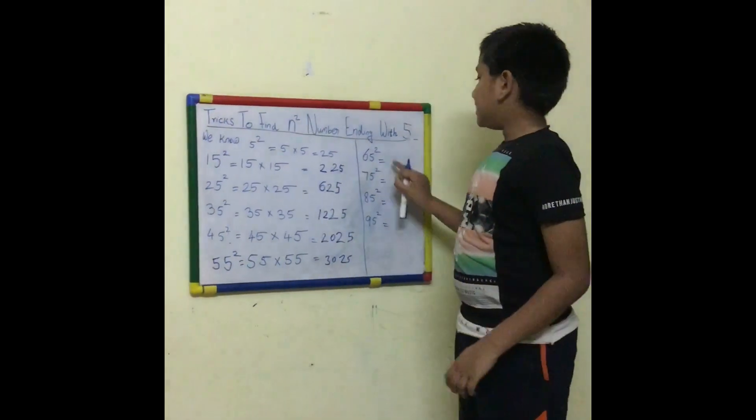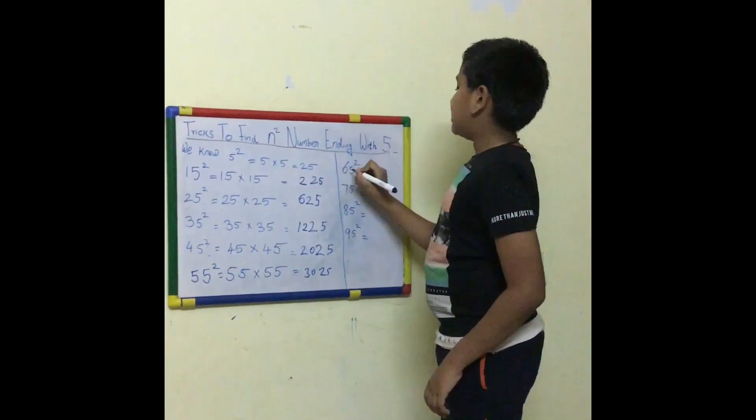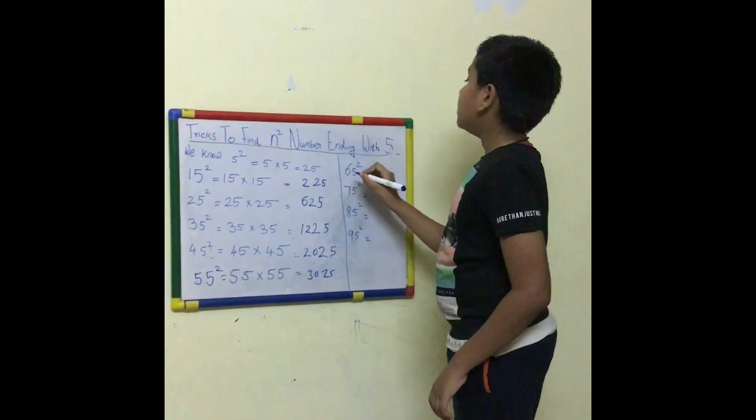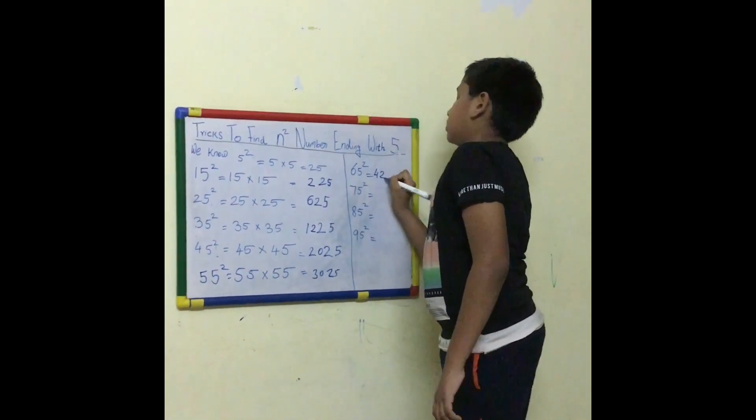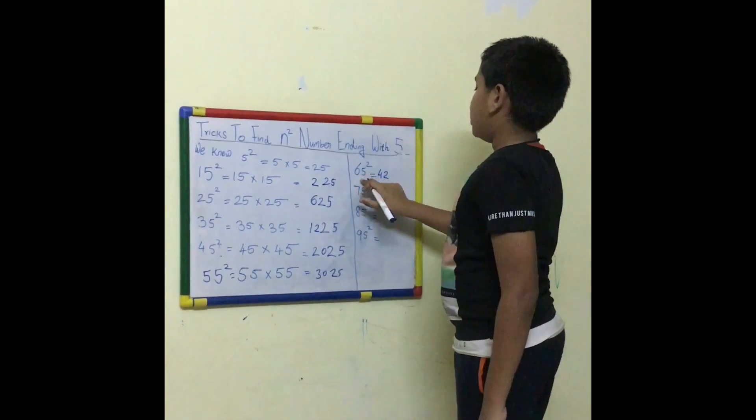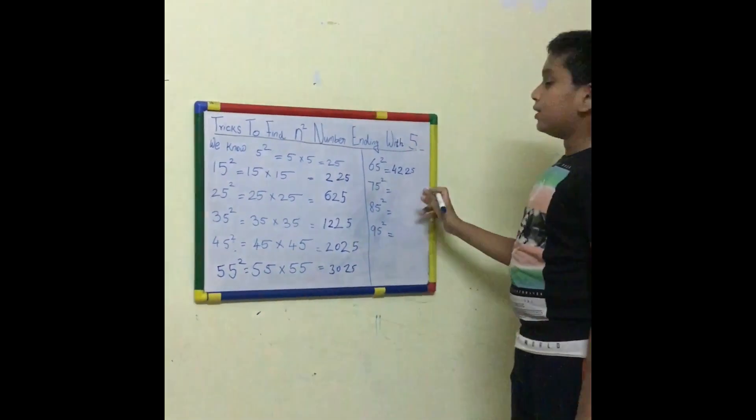Next we go to 65 squared. So 6's successor is 7. 6 times 7 is 42. 5 into 5 is 25. So the answer is 4225.